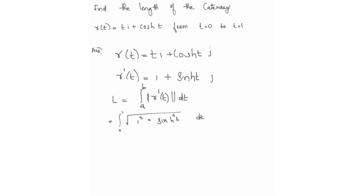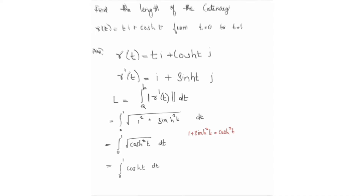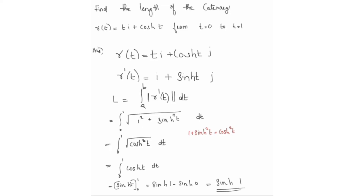We convert using the identity 1 + sinh²(t) = cosh²(t). So the integral becomes integral from 0 to 1 of the square root of cosh²(t) dt, which equals integral from 0 to 1 of cosh(t) dt. Evaluating gives sinh(1) − sinh(0) = sinh(1).